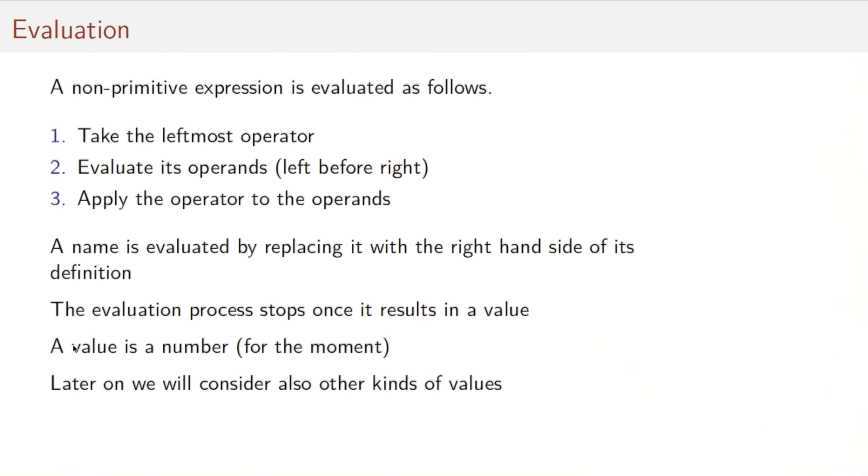Now, let's have a look at evaluation. How exactly did these expressions get evaluated? Well, the rules are well known from simple algebra. To evaluate a non-primitive expression, we typically take the leftmost operator, subject to the rules of precedence. We evaluate the operands of that operator, typically left before right, and we apply the operator to the operands. A name is evaluated by replacing it with the right-hand side of its definition. We apply these steps one by one until finally the evaluation process results in a value.